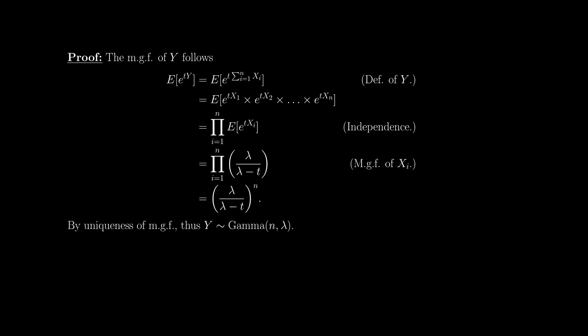Let x1, x2, …, xn be n i.i.d. exponential(lambda) random variables. Then setting y equal to the sum of all those elements — the sum from i=1 to n of xi — that summation must be distributed gamma(n, lambda), or rather Erlang(n, lambda). The proof is quite simple and follows from the moment-generating function of y. From the definition of the MGF, the expectation of e^(ty) is the MGF of y, which is just a summation.